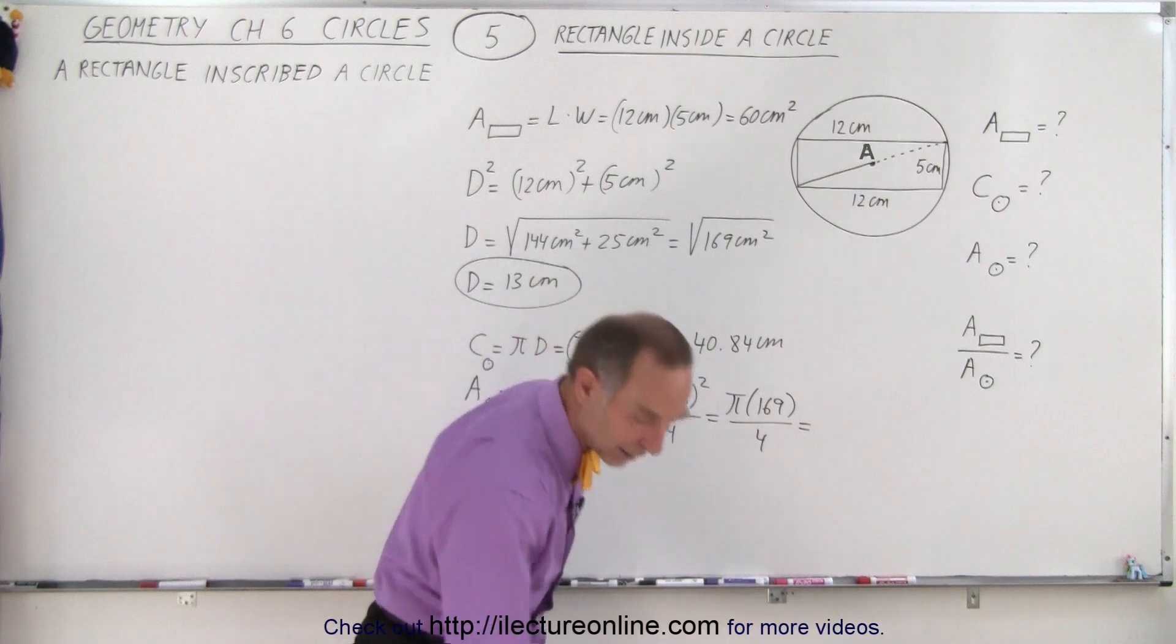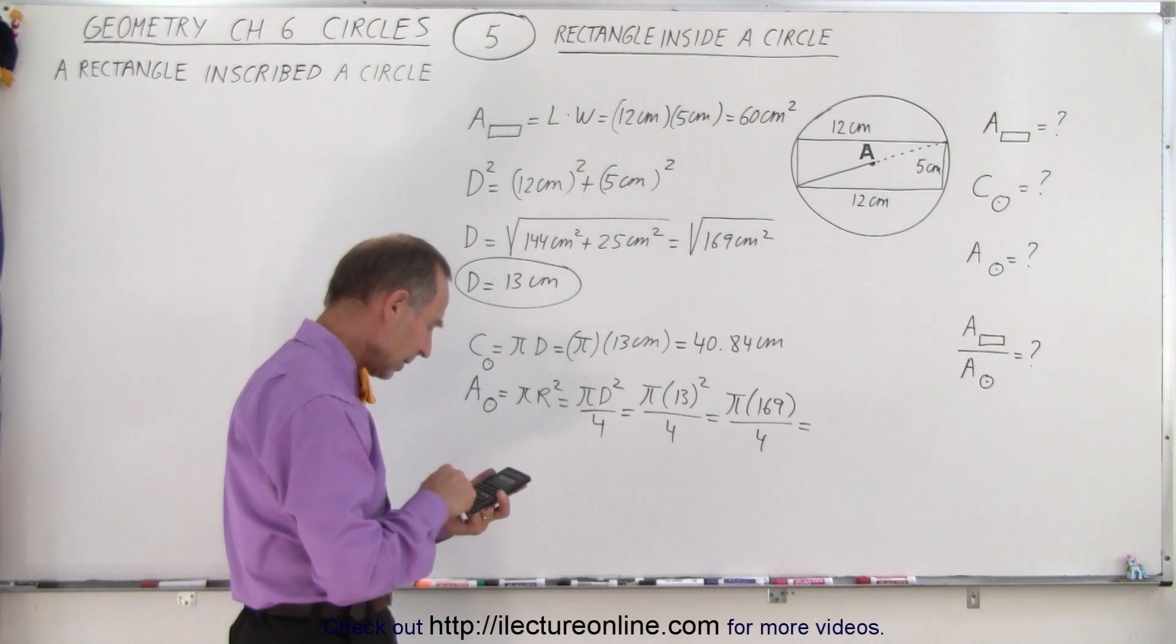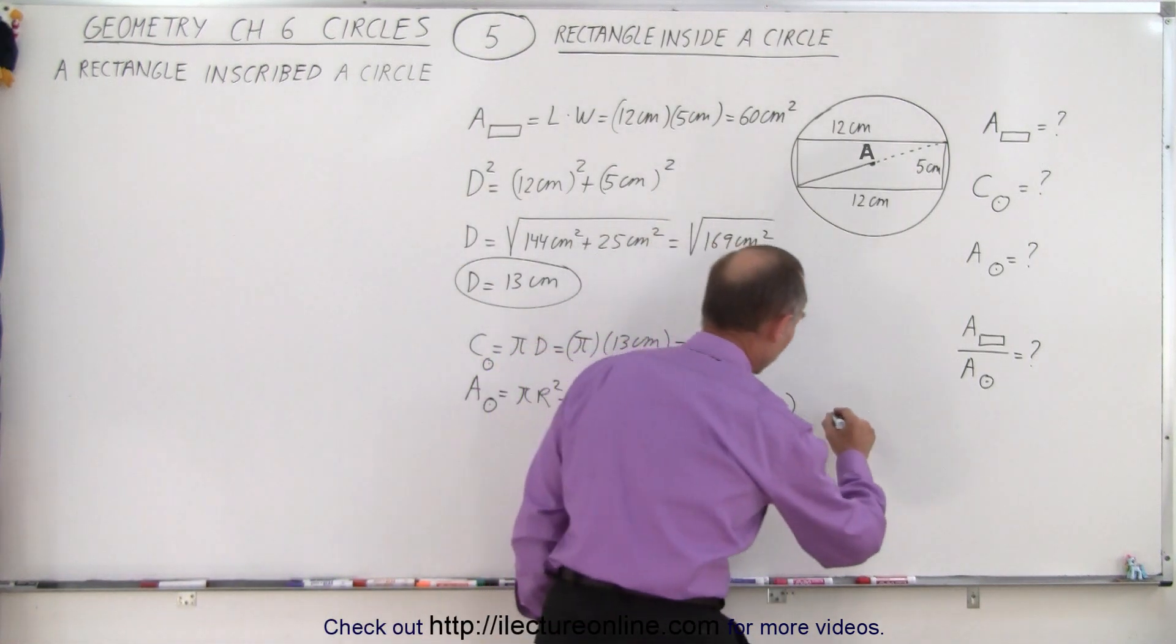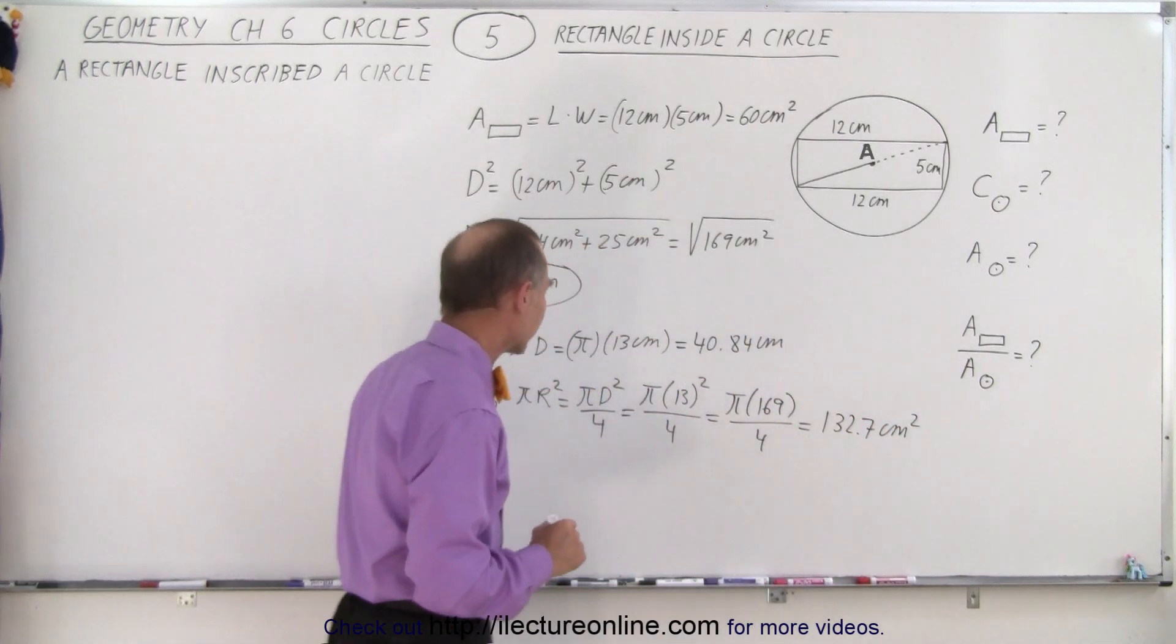So now grabbing a calculator, we take 169 divided by 4 times Pi, and we get 132.7. That is 132.7 centimeters squared, because we're looking for the area.